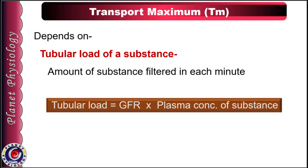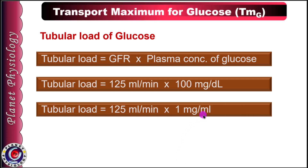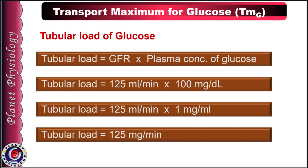Since glucose is a very important solute which exhibits transport maximum, we shall discuss this topic further with reference to glucose. Transport maximum for glucose is abbreviated as TMG. In a normal person, GFR is 125 ml per minute and blood glucose level ranges between 80–120 mg per deciliter. Assuming blood glucose level to be 100 mg per deciliter, we convert this to 1 mg per ml. Hence, tubular load of glucose is 125 × 1 = 125 mg per minute. This means that in each minute, 125 mg of glucose is filtered by the nephrons when blood glucose is 100 mg per deciliter.